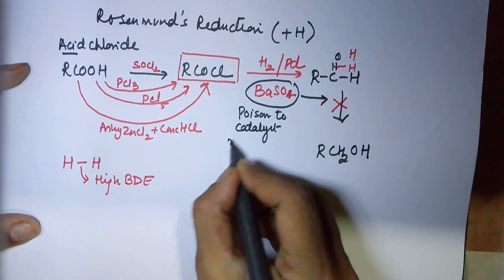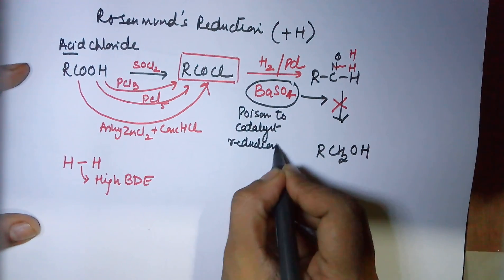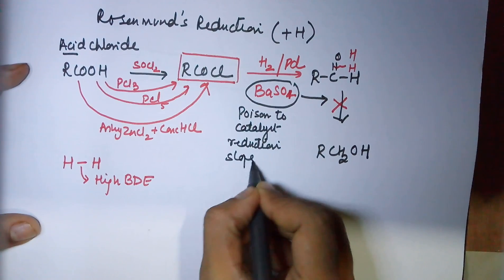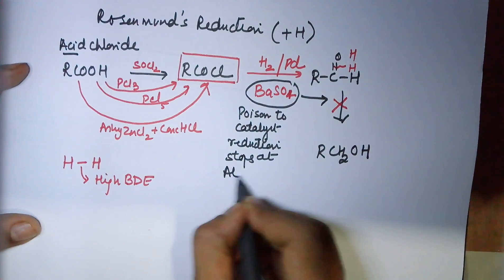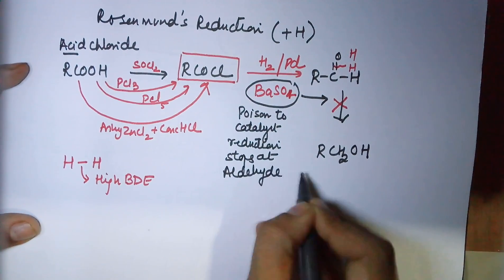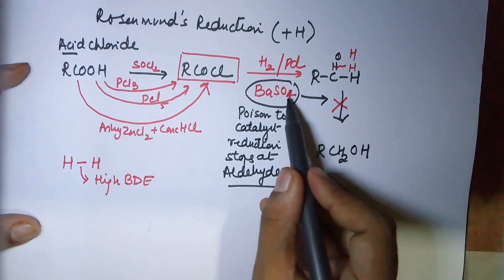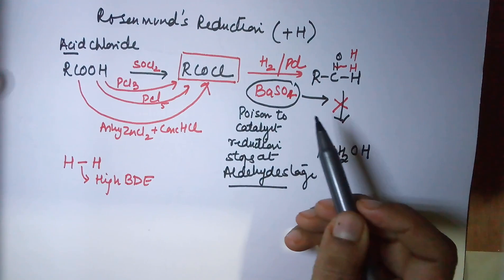So you should know the function of barium sulfate in Rosenmund's reduction - it reduces the activity of the catalyst, hence reduction stops at the aldehyde stage.